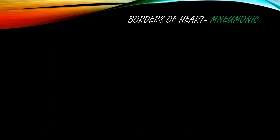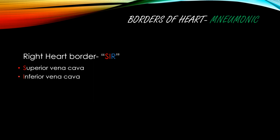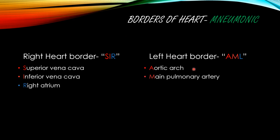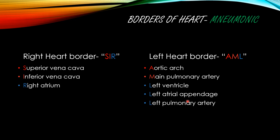How do I remember this? For the right heart border, I remember it as SIR — S for superior vena cava, I for inferior vena cava, R for right atrium. For the left heart border, I remember it as AML — A for aortic arch, M for main pulmonary artery, L for left ventricle, also including the left atrial appendage and left pulmonary artery. So: right heart border SIR, left heart border AML.